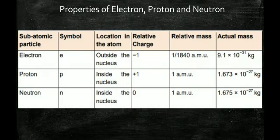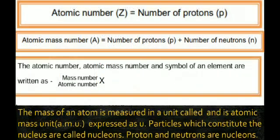The basic facts: atomic number equals the number of protons; atomic mass equals the number of protons plus the number of neutrons. In atomic notation, the symbol is written as X, with mass number at the top and atomic number at the bottom. For example, Na has mass number 23 (top) and atomic number 11 (bottom). Mass is measured in atomic mass units (u). Particles inside the nucleus — protons and neutrons — are called nucleons.